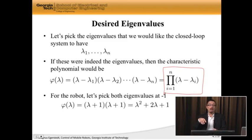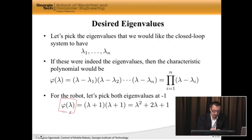So let's do that. For the robot, or the point mass, I'm going to pick both eigenvalues at negative 1. I know that they need to have negative real part. Well, minus 1 is particularly simple, because then I get this phi of lambda, which is this desired characteristic equation, not the actual characteristic equation, but the desired one. It's just lambda plus 1 times lambda plus 1, or if I carry out this multiplication, I get lambda squared plus 2 lambda plus 1.